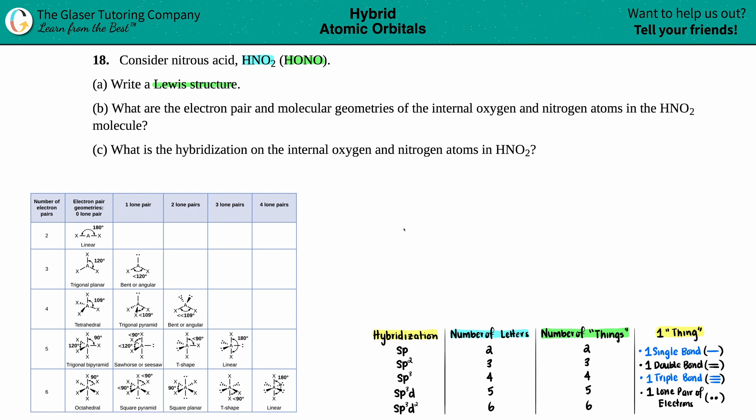Okay, so we have HONO. Doing the Lewis structure, we always put the valence electrons on each element. So periodic table's out, right? Hydrogen is in group one, so that's only got one electron.